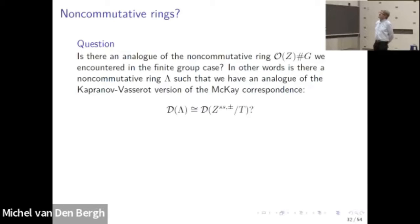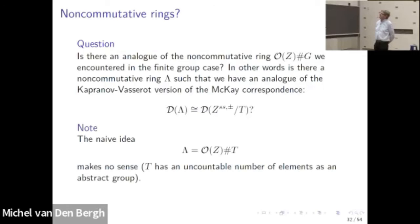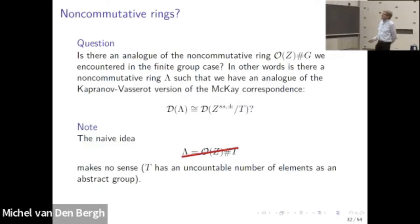So we have our resolutions. The question is: can we also find a non-commutative ring which plays the role of the cross product? If you think we can just take the cross product with the torus, that would be a very bad idea, because T is uncountable as an abstract group — that would be much, much too big. What we need is a new concept.